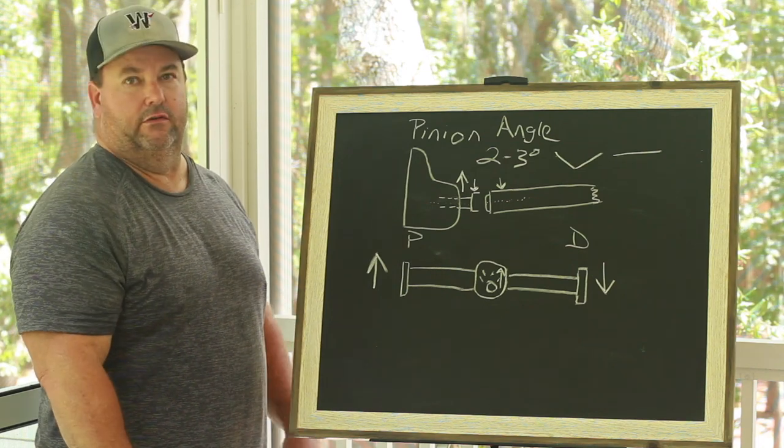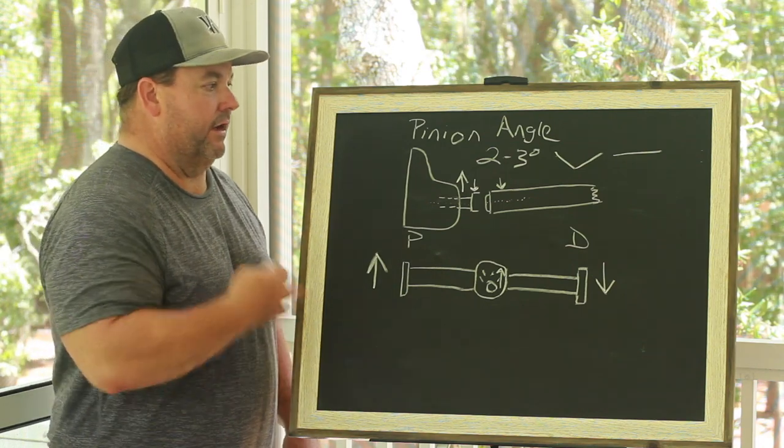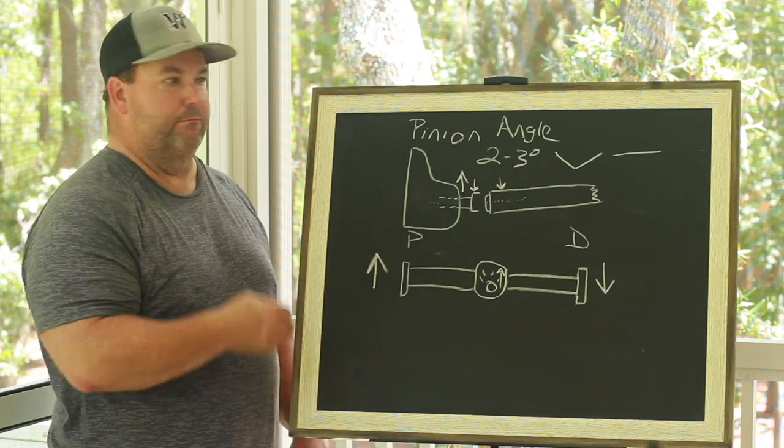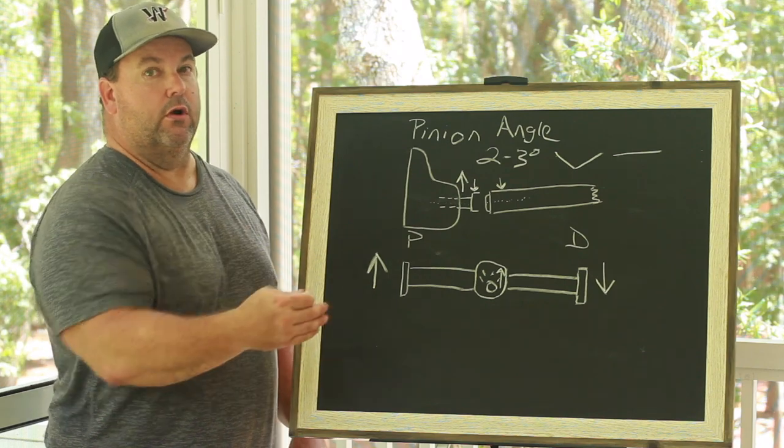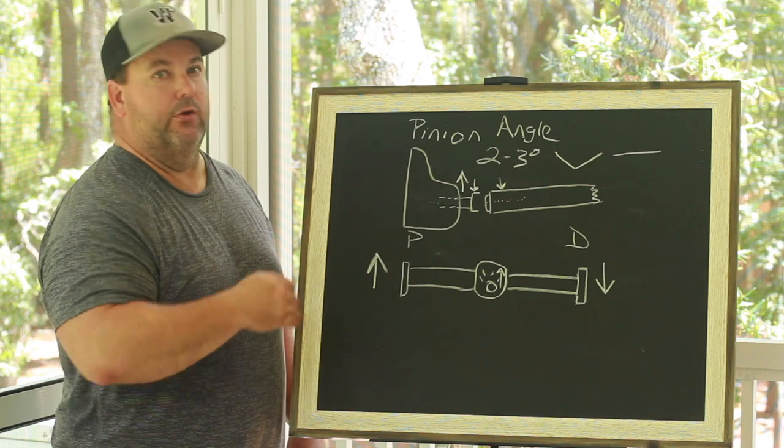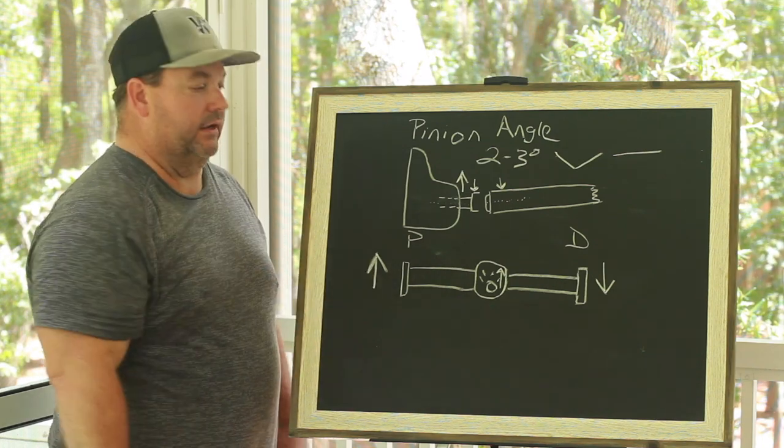If anything, you're losing ET and 60 foot and traction with all this twisting and nonsense going on. So as drag racers, we're trying to overcome some of these natural tendencies and put that energy to work to get our car down the track and try to apply traction and bite to our slicks.